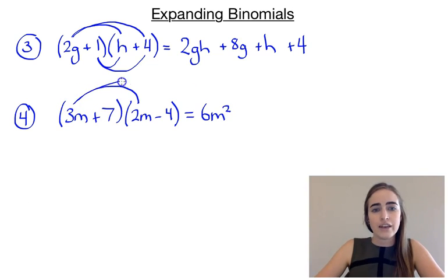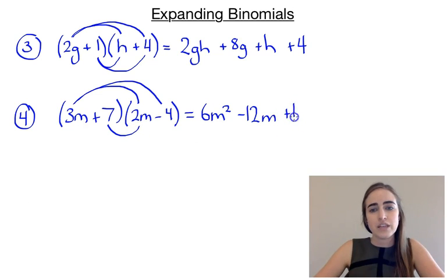Then we've got our 3m times minus 4. So 3 times minus 4 would give us minus 12, and we've got that m on there as well. So that's that first term. Now we need to do our 7. So 7 times 2m would give us 14m. And then 7 times minus 4 would give us minus 28.